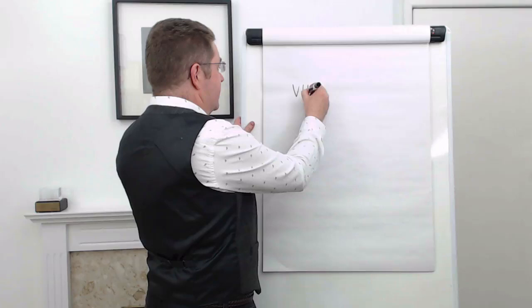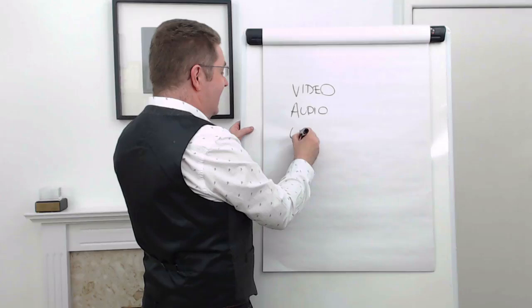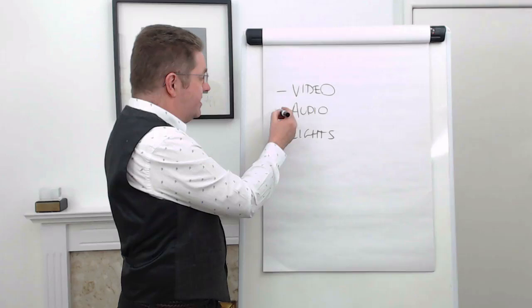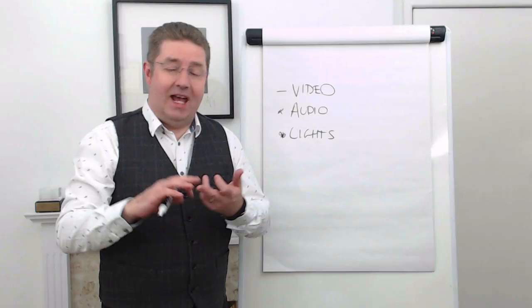So when it comes to equipment for video, you really need three things. You need video, obviously you need to be able to record the video, you need audio, and you need lights or lighting. Now, surprisingly enough, the biggest place that most people go wrong that makes their videos look bad or that people just don't want to watch them isn't with the video itself, it's with the audio or the lights.